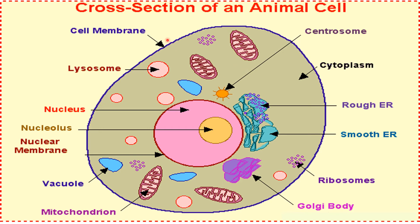First, the cell membrane. A cell membrane is the outermost covering of a cell which protects the cell and is selectively permeable. The word permeable means that the cell membrane allows only certain substances to pass through.